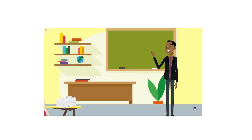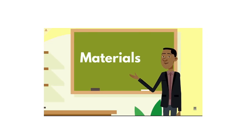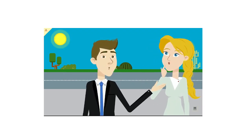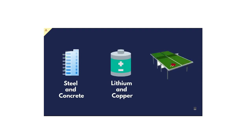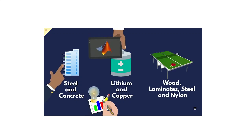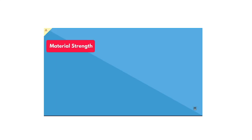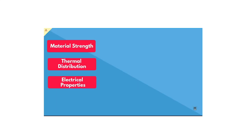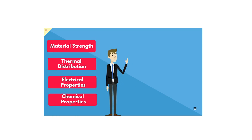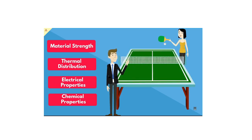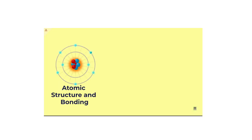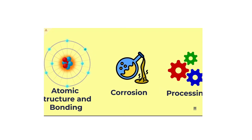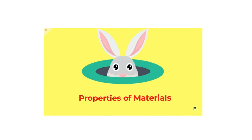Manufacturing wouldn't be relevant without materials. Every produced object is made of specific materials — skyscrapers have steel and concrete, Tesla batteries have lithium and copper, and ping pong tables have wood, laminates, and steel and nylon. Mechanical engineers optimize for material strength, thermal distribution, and electrical and chemical properties. Students cover everything from atomic structure and bonding to corrosion, processing, and the properties of materials.